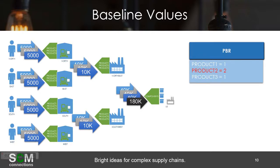The PBR, or periods between replenishment, is going to be 1, with the exception of product 2 where it will span 2 periods. The lead time — in this case the transportation lead time between the warehouse and the manufacturing plant — is going to be 0, with the exception of product 3 where it is 1.